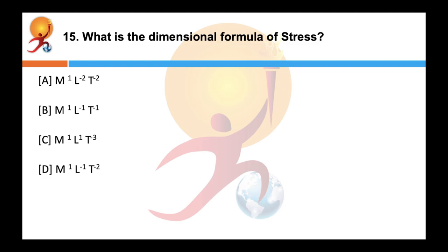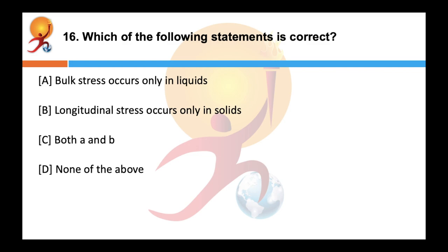What is the dimensional formula of stress? Correct answer is M¹L⁻¹T⁻². This is because stress is defined as external force per unit area on a body that tends to cause it to deform. Which of the following statements is correct? Correct answer is — longitudinal stress occurs only in solids. It comes into picture only when one of the three dimensions (length, breadth, or height) is much greater than the other two.